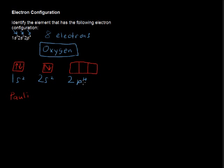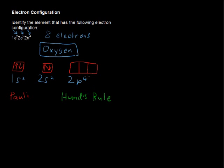Now the 2p subshell — this p shell has three possible orbitals, and that's why I have three boxes here. If you have three orbitals, in each of those orbitals you could have two electrons. But I only have four total, so how should I arrange those four electrons? Should I put one up and one down, and then one up and one down? I could do that, but there's something called Hund's Rule — H-U-N-D — and that says we want as many electrons in parallel as we can in each subshell.